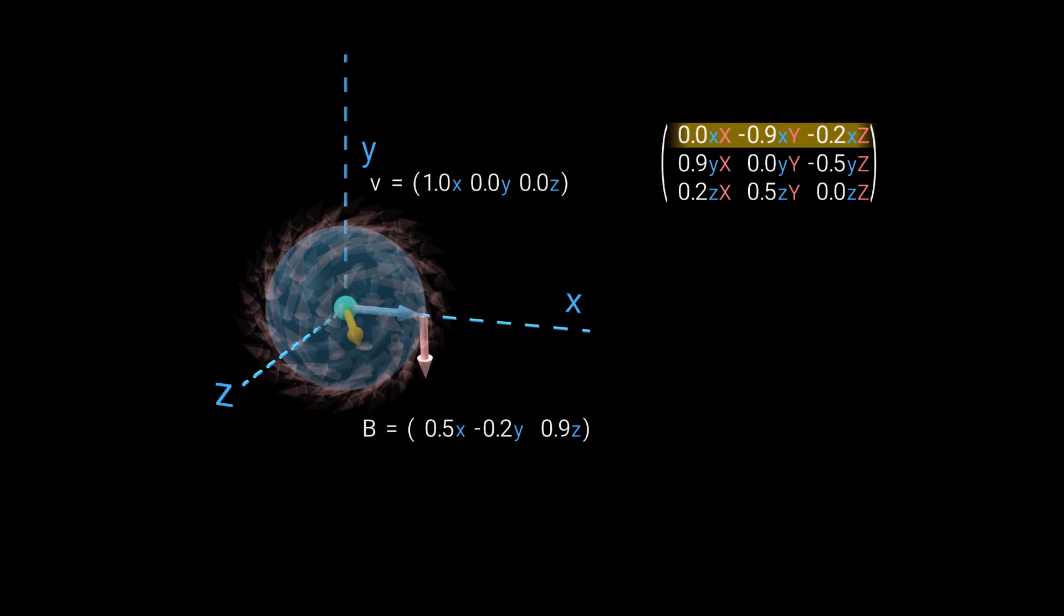The row contains the force mapped to this velocity, which is the cross-product of 1, 0, 0 and B. The result has a distinctive pattern, 0, then two components of B flipped, and one of them negated. The other rows have similar patterns.